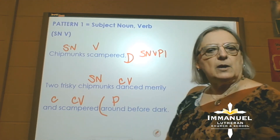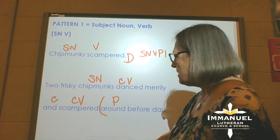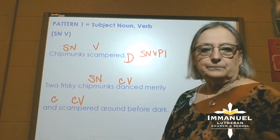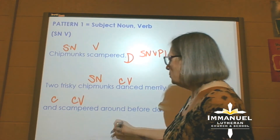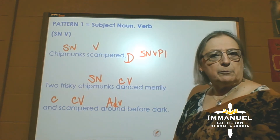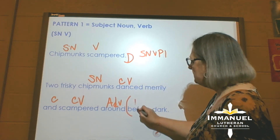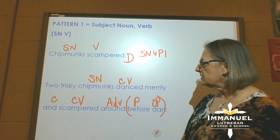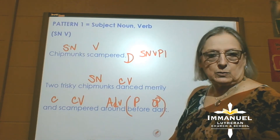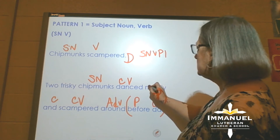And once I find a preposition, I say, around what? And I actually just made a mistake because I cannot answer around what? I find out — no, it looks like a preposition, but it's actually answering the question where. Chipmunks scampered where? Around — adverb. Before — it looks like a preposition. Let's ask a preposition question. Before what? Before dark. So preposition, object of a preposition. We put parentheses around our prepositional phrases. I come back into the sentence — I see merrily. What question could merrily be answering? Chipmunks danced how? Chipmunks danced merrily — adverb.